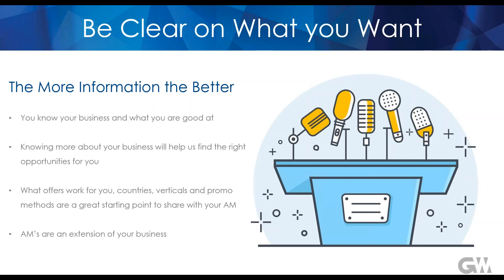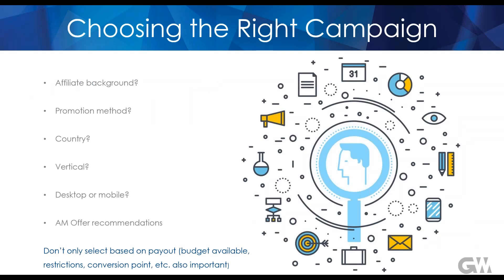We have over 1,500 live offers on our network right now, and choosing the right campaign can be overwhelming at times. Ask yourself a few questions: what campaigns have worked for you well in the past in terms of promotion method, country, and vertical? Do you mainly specialize in desktop or mobile traffic? Based on these variables we have filters on our interface to narrow down your campaign search, and your affiliate manager can send over a top performing offer list with EPC and conversion rate information.